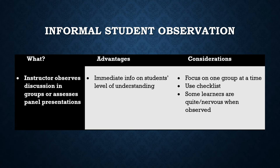Informal student observations: the instructor observes group discussions and may assess panels of student presentations. You immediately get a sense of what the learners know and their level of understanding. The consideration is that you need to focus on one group at a time, have a checklist, and note that some learners may be quiet because they feel nervous being observed.